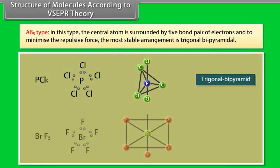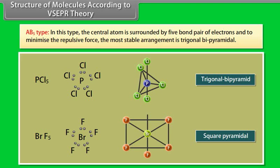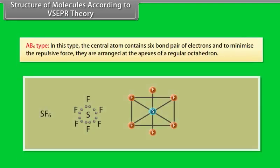AB5 type: the central atom is surrounded by five bond pairs of electrons and to minimize the repulsive force, the most stable arrangement is trigonal bipyramidal. AB6 type: the central atom contains six bond pairs of electrons and to minimize the repulsive force, they are arranged at the apexes of a regular octahedron.